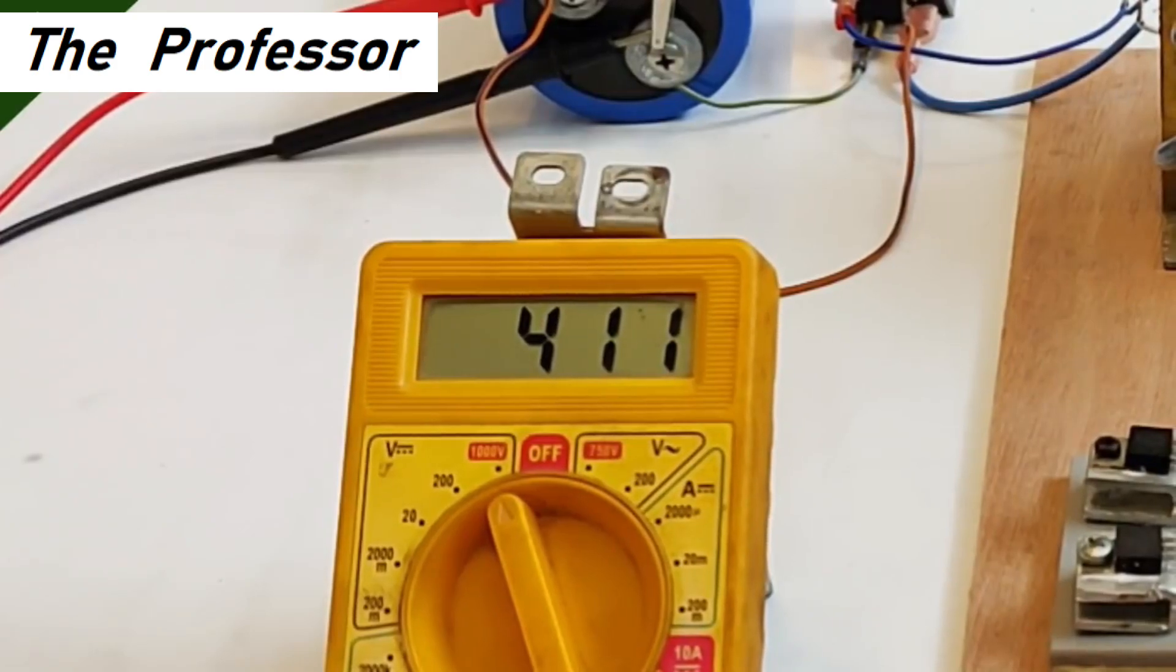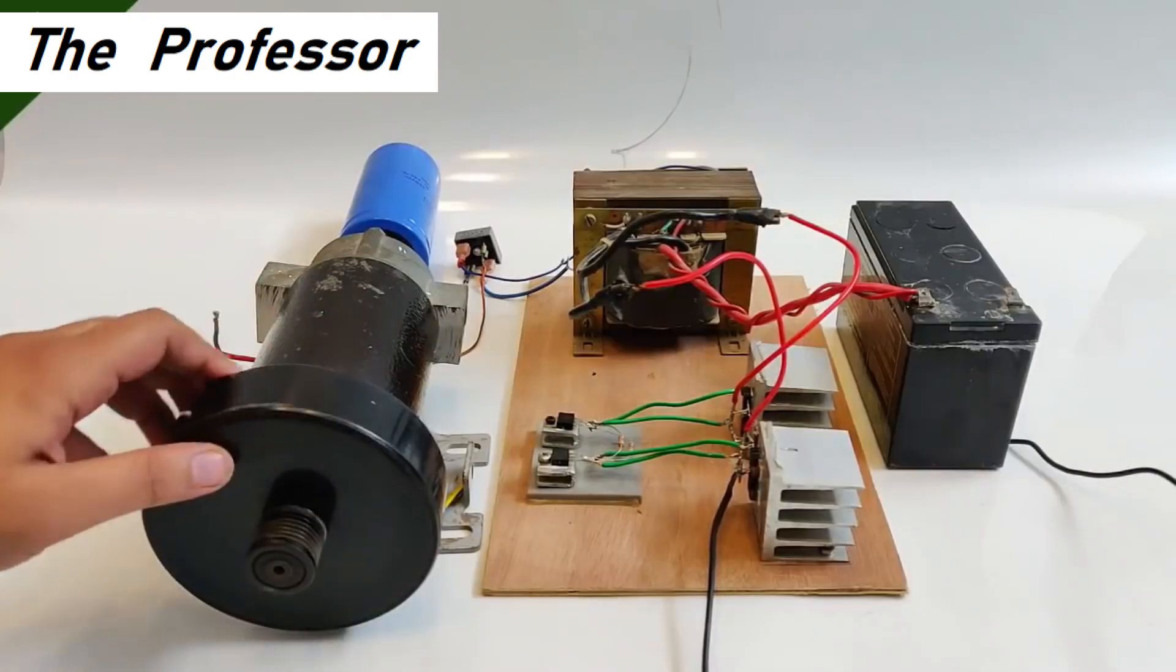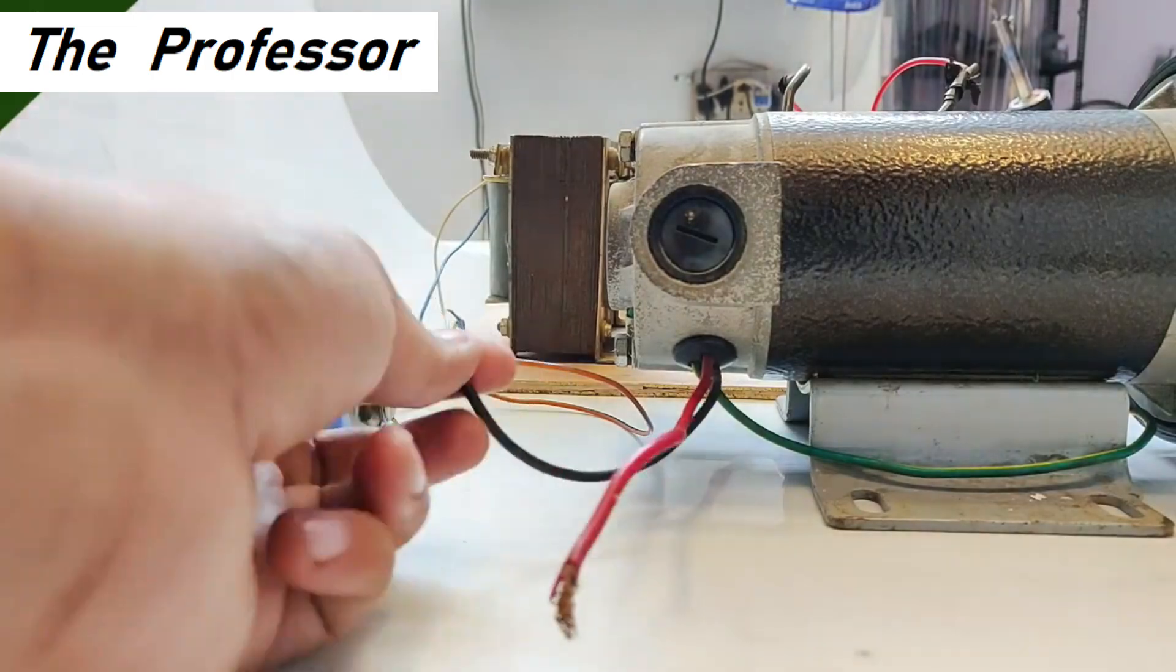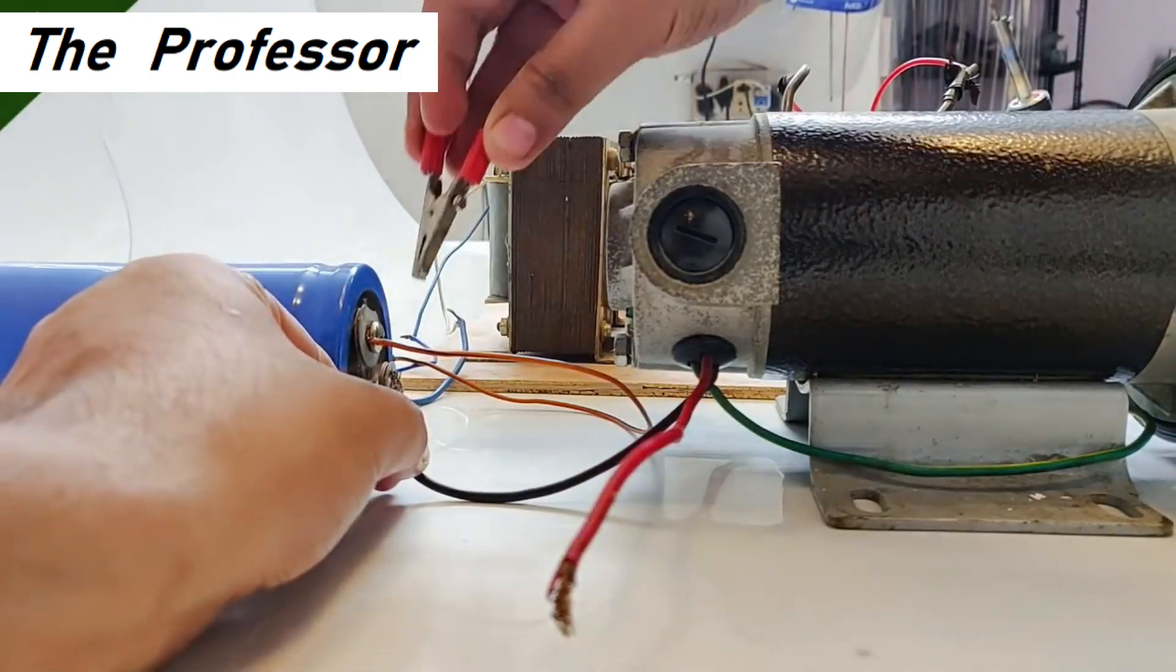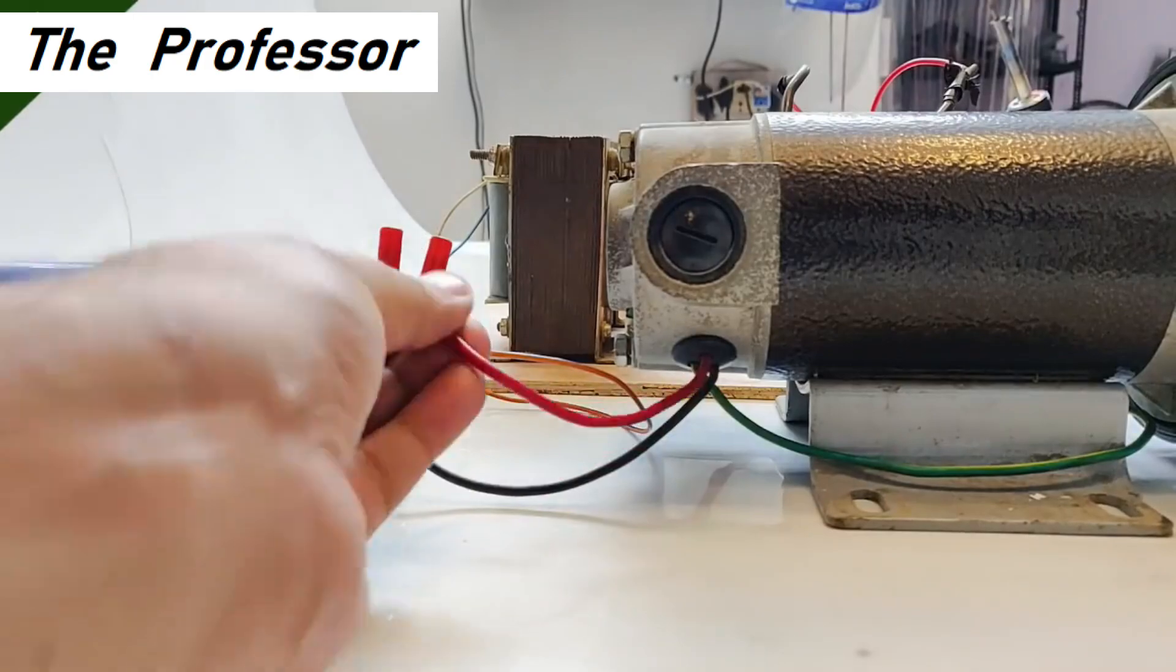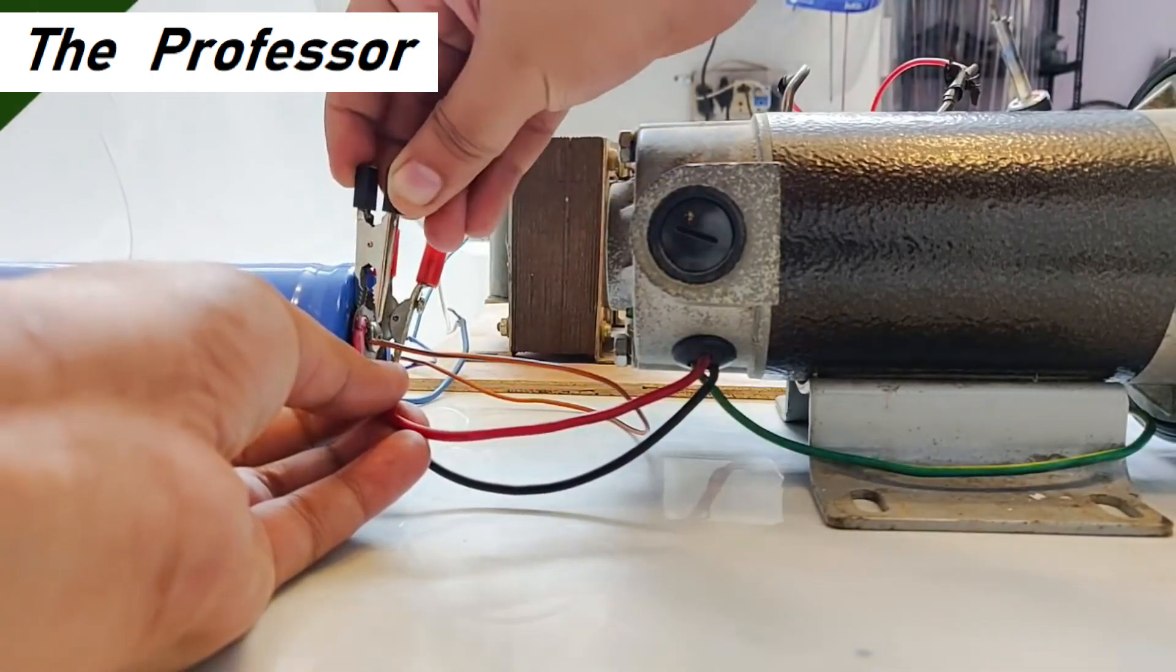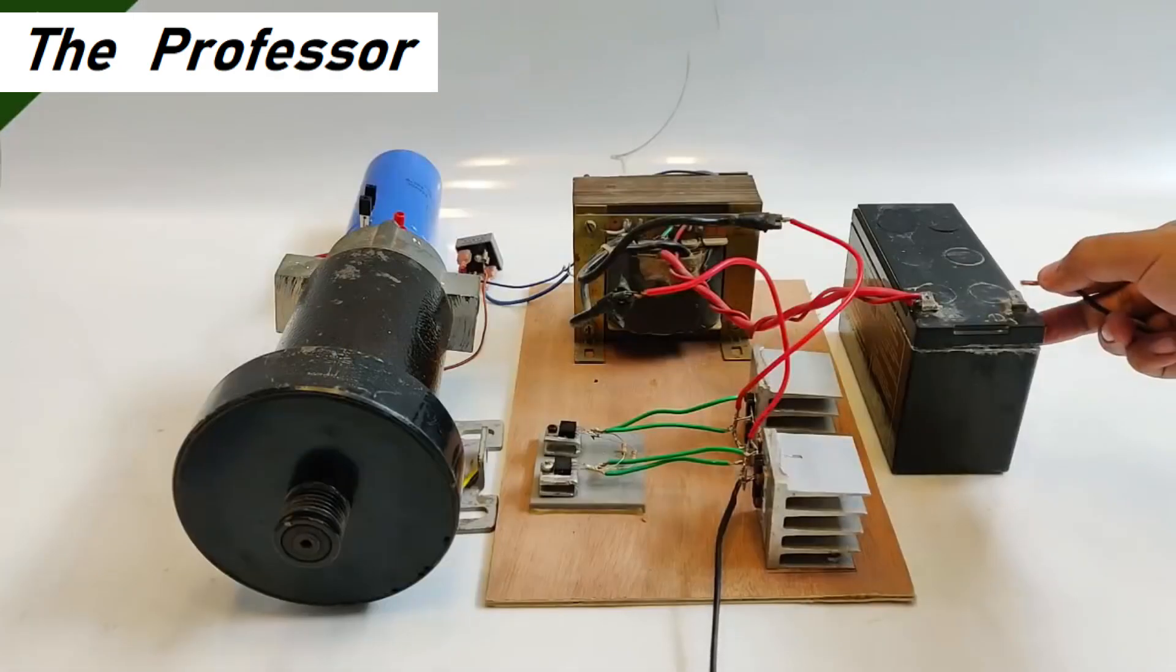With that hope let's connect the DC motor directly to the output terminals of the capacitor. Now here we have the DC motor running pretty good. Let's connect this wire to this one, done. Now the second one, okay. Both the wires have been connected.